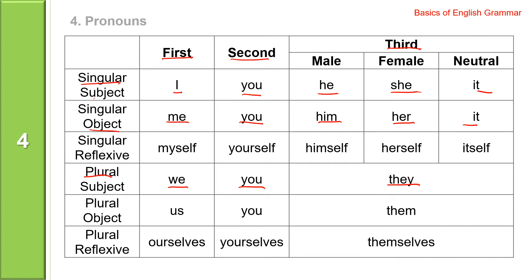Object plural: us, you, and them. And reflexive pronouns, singular: myself, yourself, himself, herself, and itself. Plural: ourselves, yourselves, and themselves.